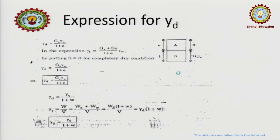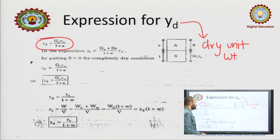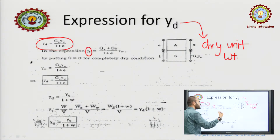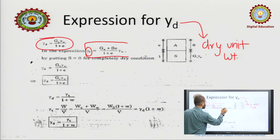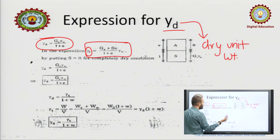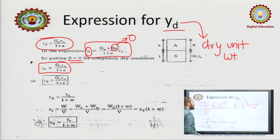Now gamma_d — dry unit weight. The final expression is G_s·gamma_w/(1+e). From the gamma_t expression, for dry unit weight, S equals 0. Putting S = 0 in the bulk expression, the S·e term becomes 0, and we are left with G_s·gamma_w/(1+e). So gamma_d = G_s·gamma_w/(1+e).